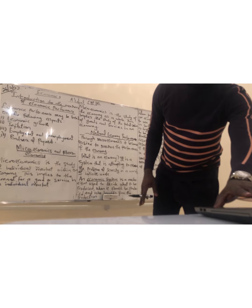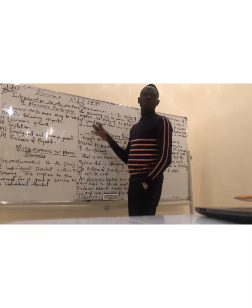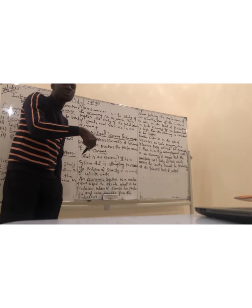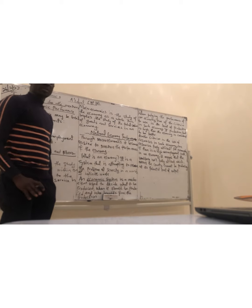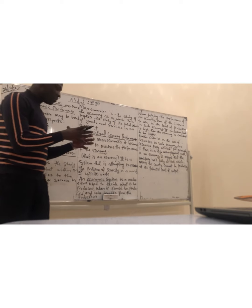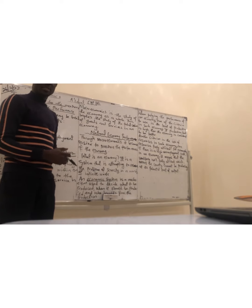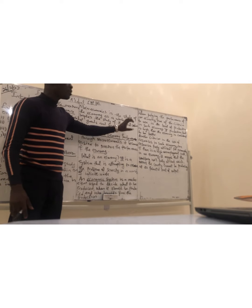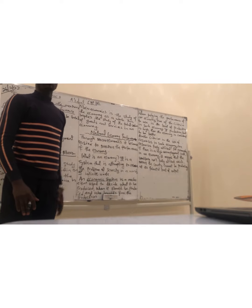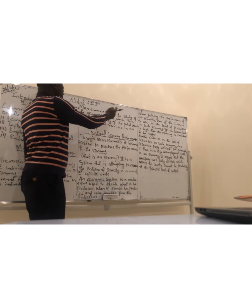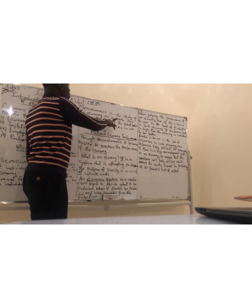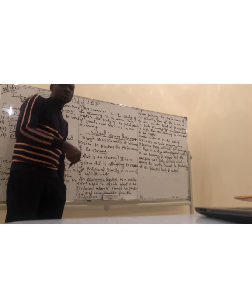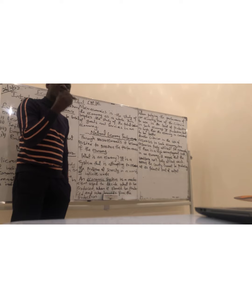When talking about macroeconomics, that's the whole of the markets — the total of goods and services produced in that economy. That is macroeconomics. Microeconomics is the study of an individual market and what is being produced in that individual market. But when we're talking about macroeconomics, we're talking about the study of the whole economy — the total value of goods and services in an economy. When you need to study that, you're studying macroeconomics.